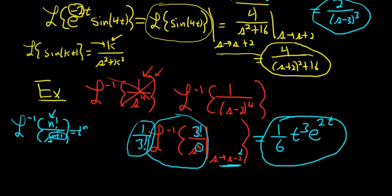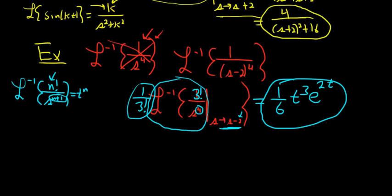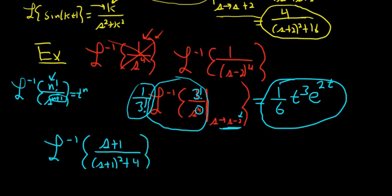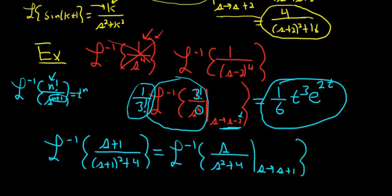Let's do another one so it makes a little more sense, maybe. How about something like this? Inverse Laplace of S plus 1 over S plus 1 squared plus 4. So in this case, we can do a shift. So it'll be S over S squared plus 4. And then we'll shift S to S plus 1. Again, notice the shift always takes place in the S space. It's always with the S.